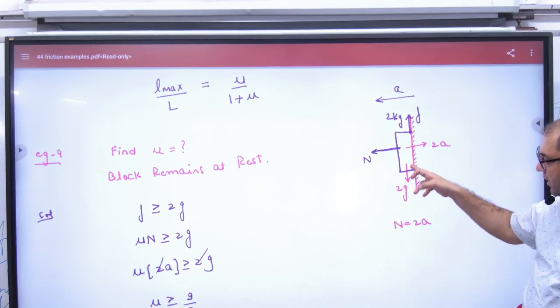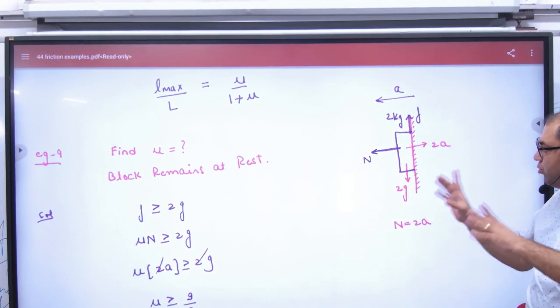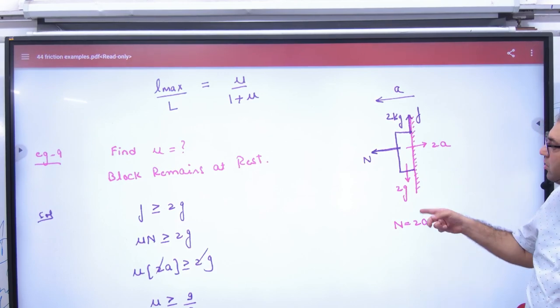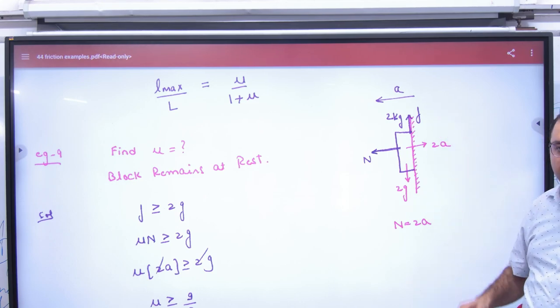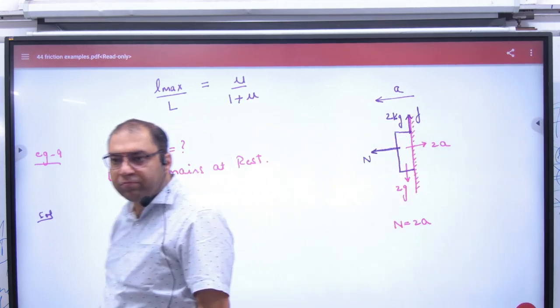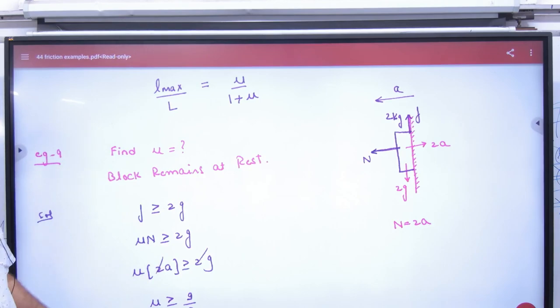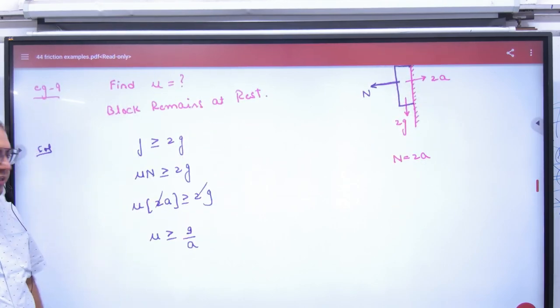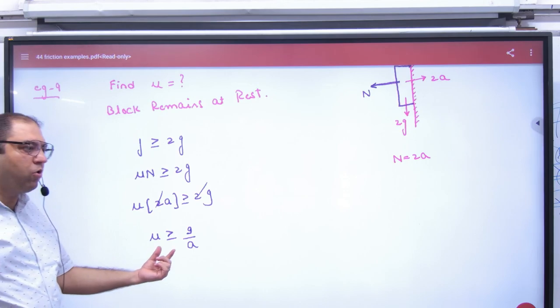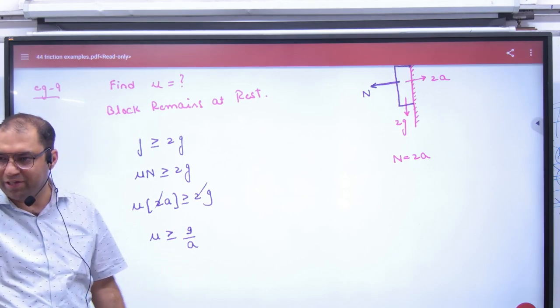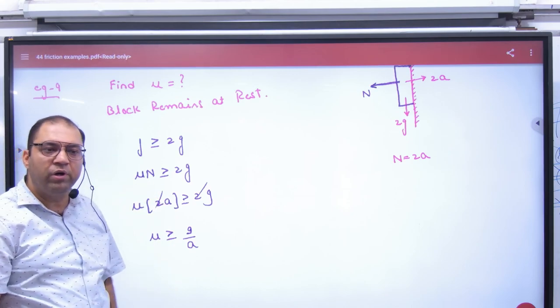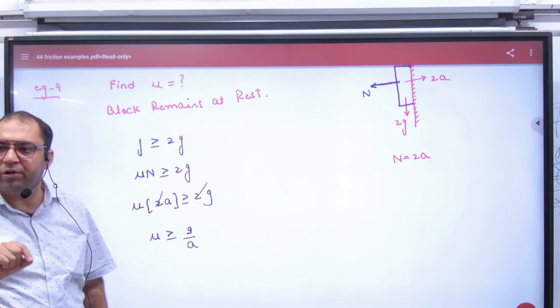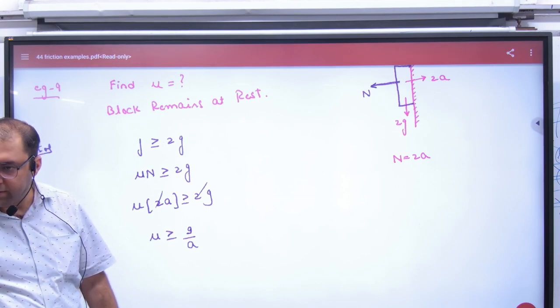So why will this fall down? Because of its weight 2G. Why will it not fall down? Because of force of friction. If you want to fall down, then force of friction should be greater than equal to 2G. So what is force of friction? Mu times normal reaction. What is normal reaction here? 2A. 2-2 cancel. So you will give an answer to the objective that if you don't fall down the block, then what is mu value? Greater than or equal to G by A. Right? Clear?